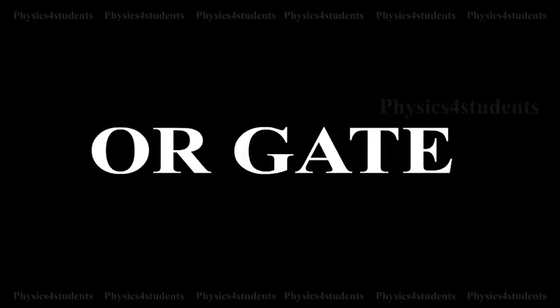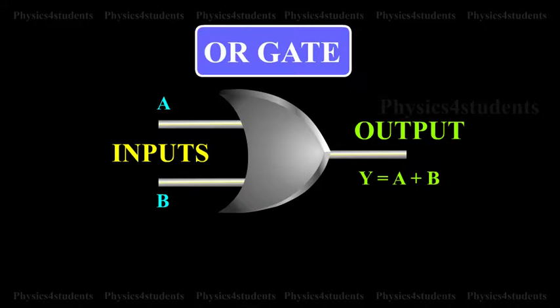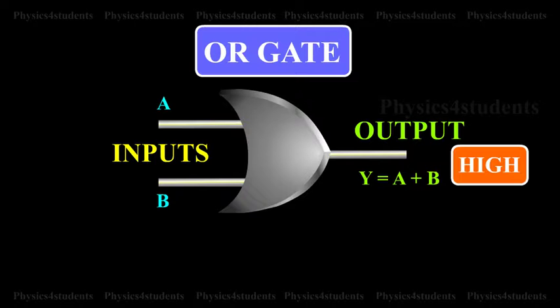OR gate. An OR gate has two or more inputs but only one output. It is also known as OR gate because the output is high if any one or all of the inputs are high.